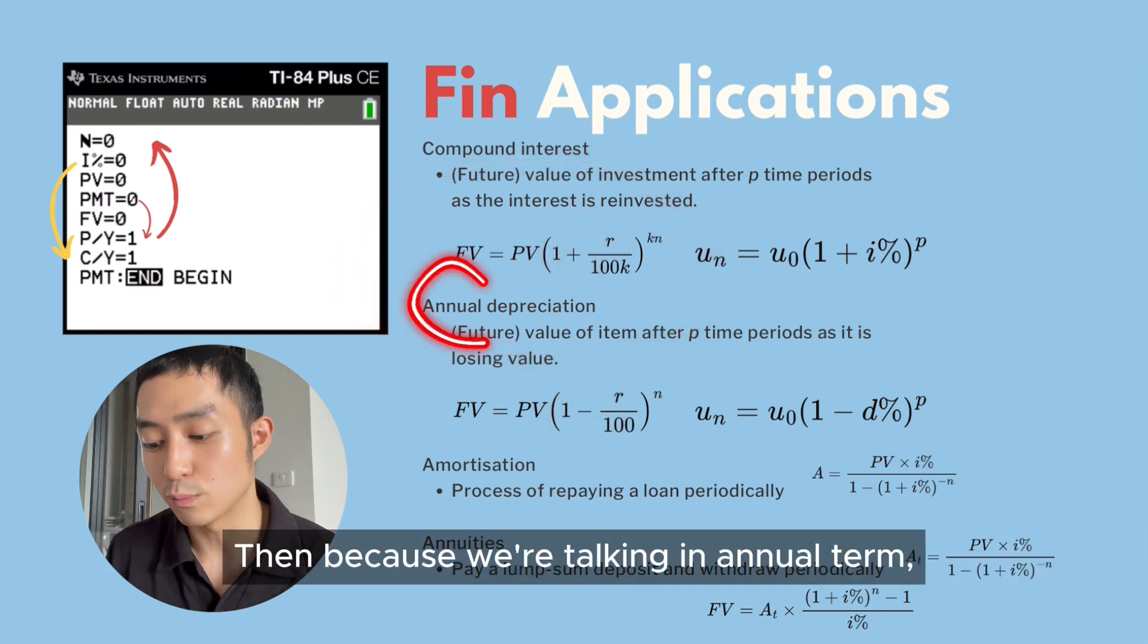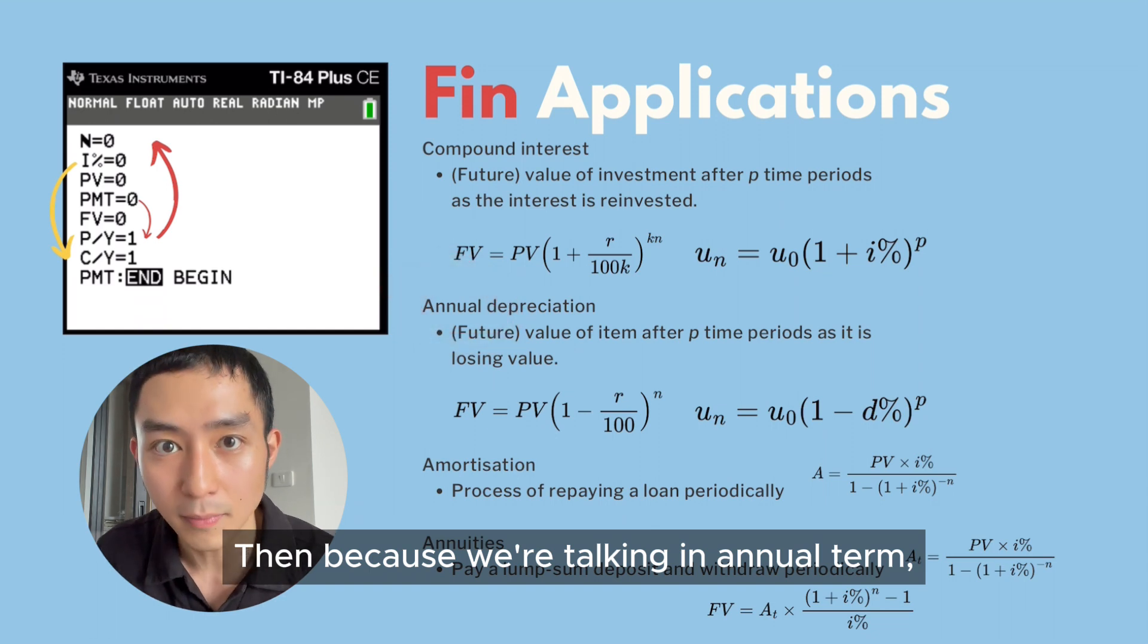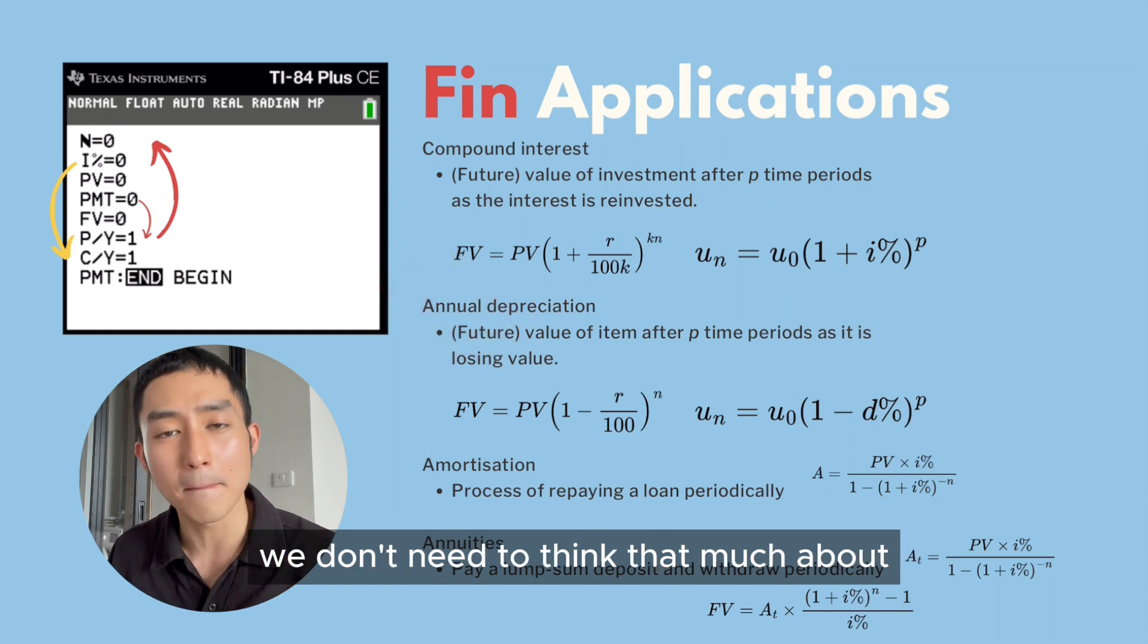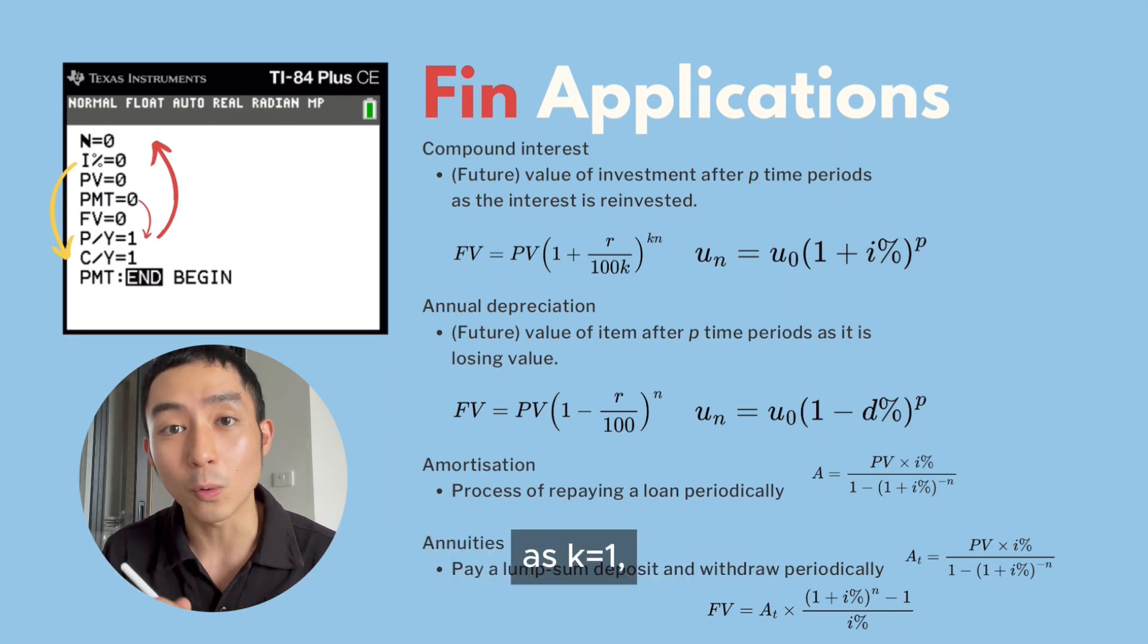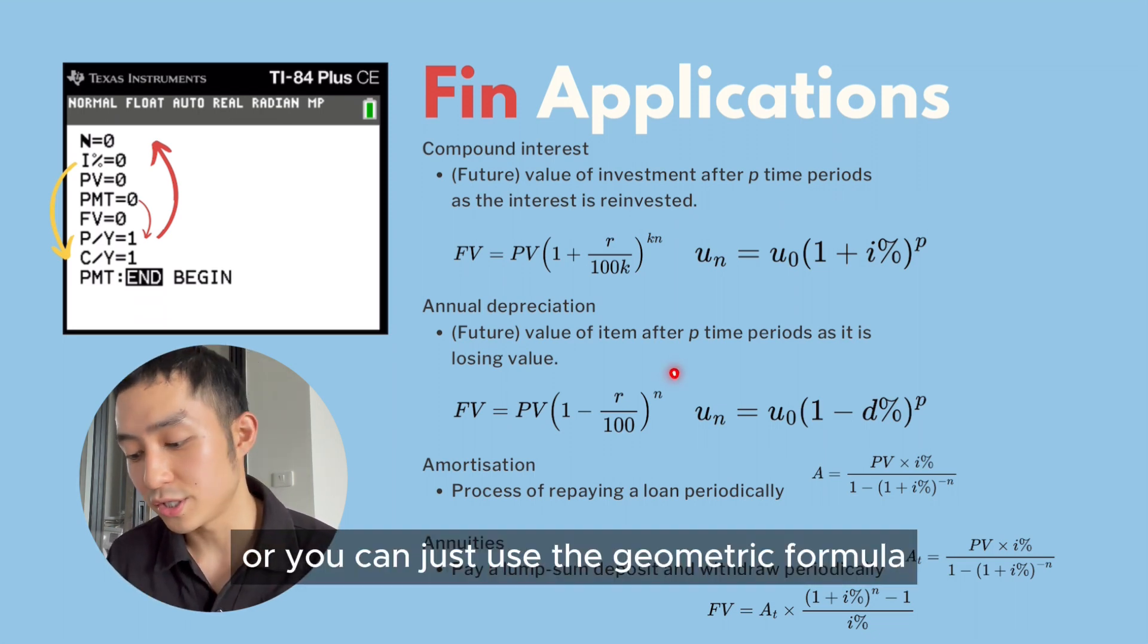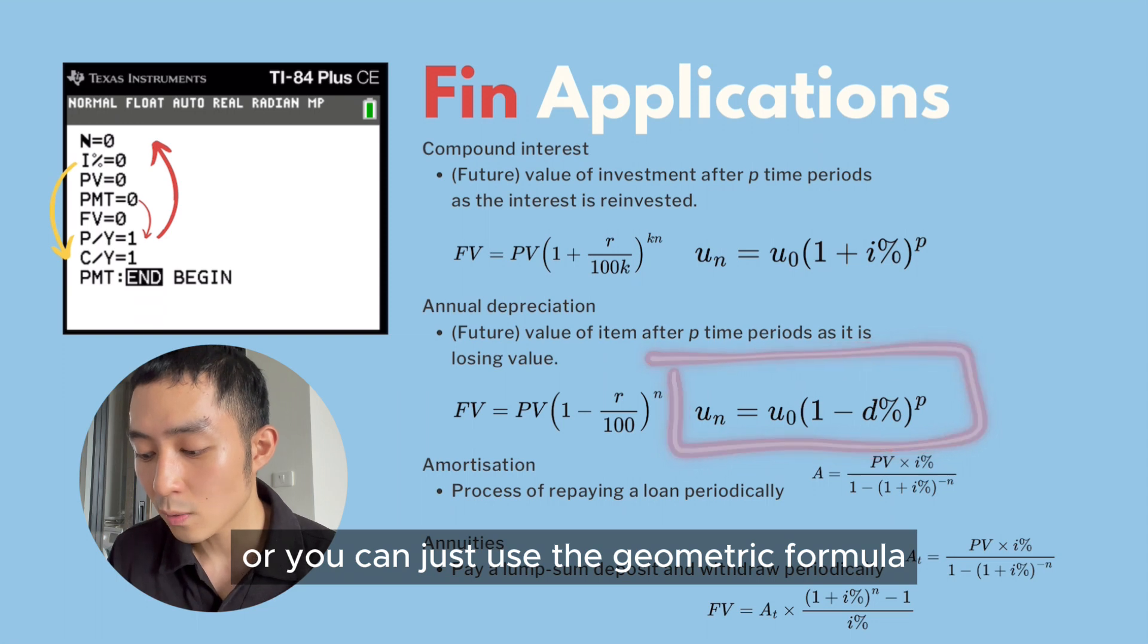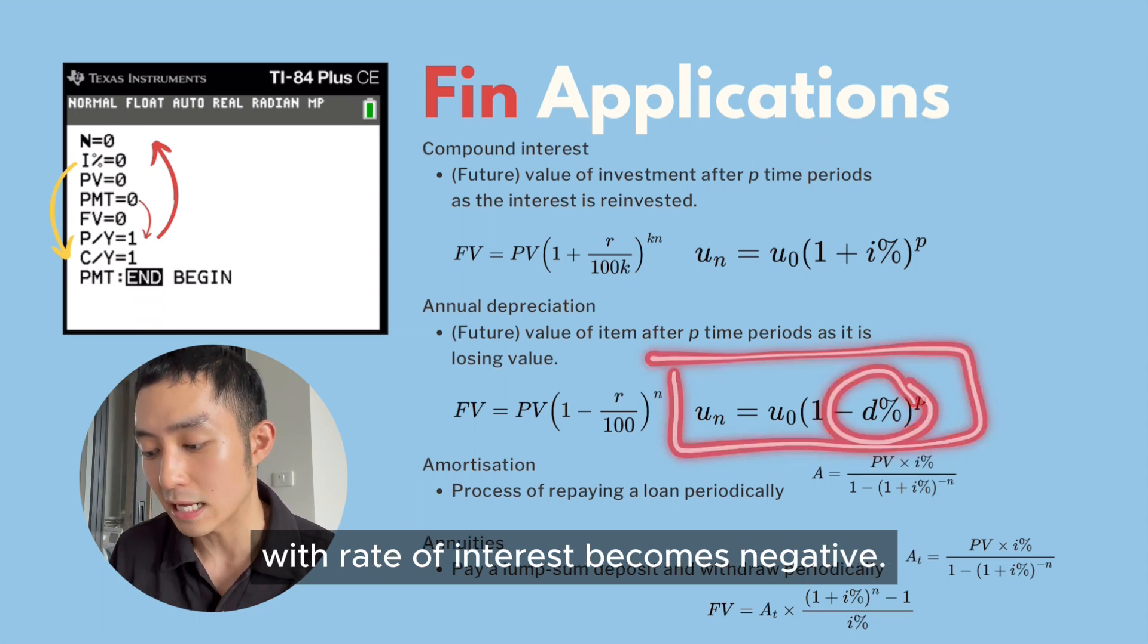Because we're talking in annual terms, we don't need to think that much about the compounding period as K will always equal 1. Or you can just use the geometric formula with rate of interest becomes negative.